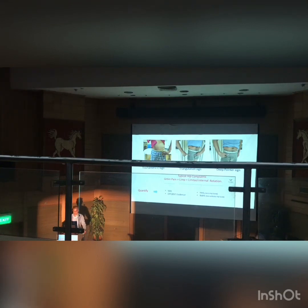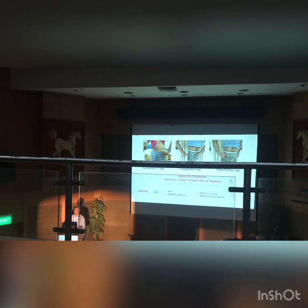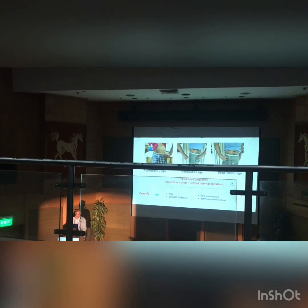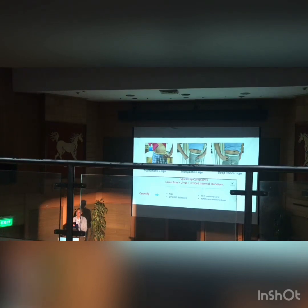Patients with hip problems generally present with groin pain, limp, and limited internal rotation. These are the presenting symptoms. Patients will either point like a trochanteric C-sign, a trochanteric triangulation sign, or a pointer. It is good in our presentation to make a visual analog score — on a scale of 10, the pain is this much; it was 5 five months ago, today it is 7. This kind of communication with your examiners will leave a good impression.